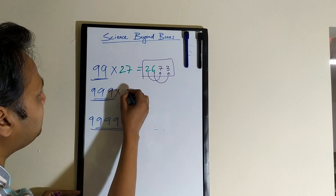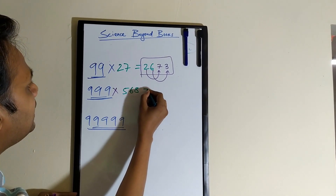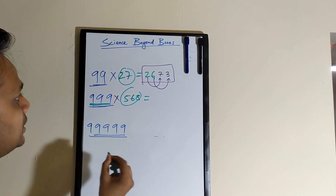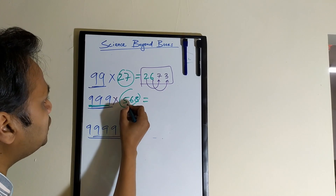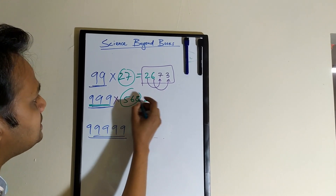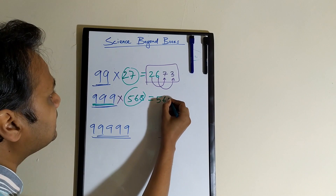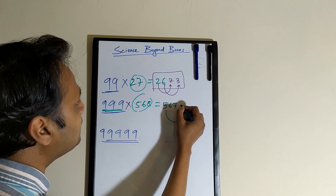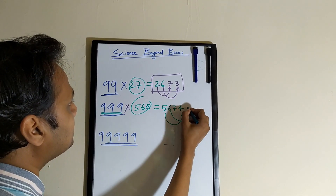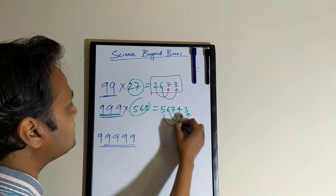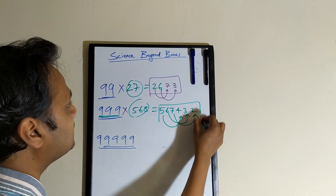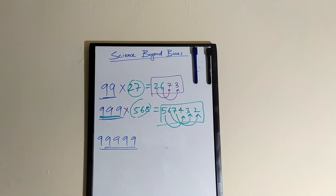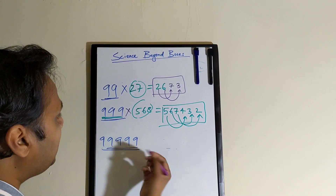Let's take another example: if you multiply 999 by a 3-digit number, say for example 568 - any number you can take. This has to be all 9s, so if you multiply 3-digit by 3-digit, what you want to do is just subtract 1 from this number, so it becomes 567. Then you subtract each digit from 9: 9 minus 5 is 4, 9 minus 6 is 3, 9 minus 7 is 2. So the answer is 567432.